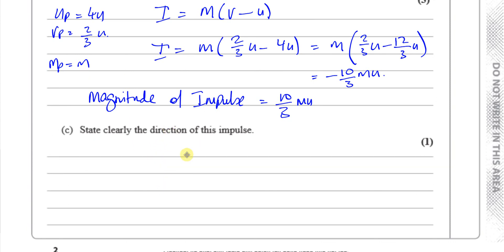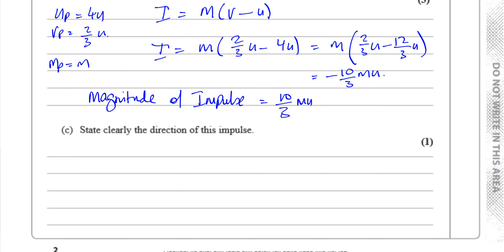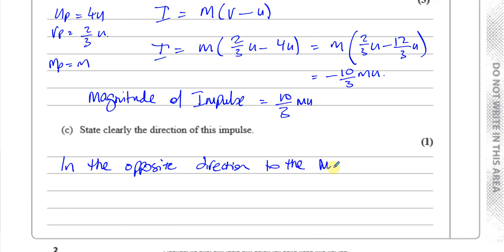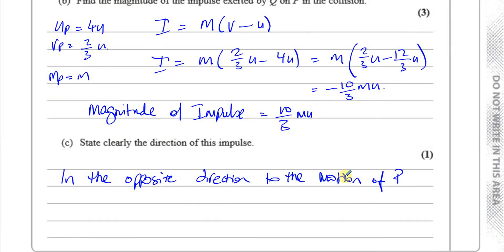They also ask us to state clearly the direction of this impulse. The direction of the impulse exerted by Q on P is in the opposite direction to the motion of P. P is moving in that same direction the whole time, so the impulse acts opposite to the motion of P.